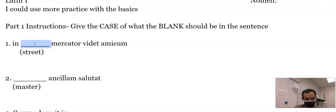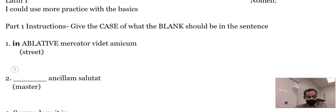So in the street, 'in via' would be the ablative case because it comes after the word 'in'. Ablative is always after the word 'in'. Master, 'ancillam salutat,' 'ancillam' with that A-M, that little A-M there tells me that that is a direct object. That is accusative, so this has to be the subject of the sentence. This would just be nominative.